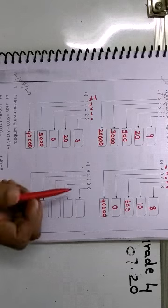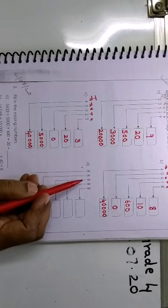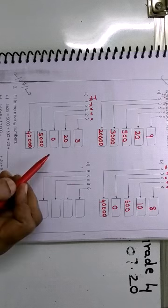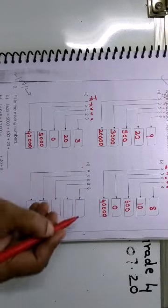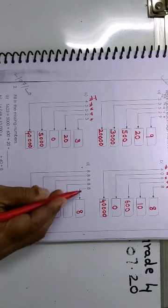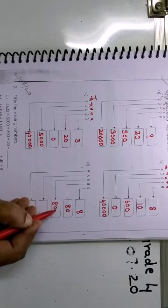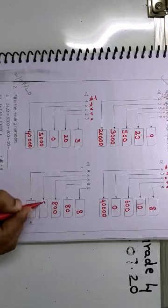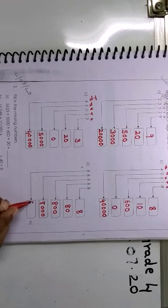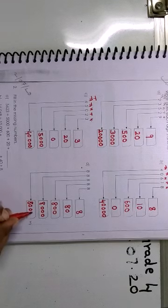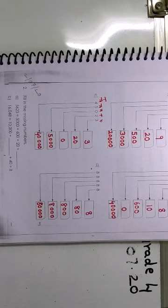Now finally we come to the last one, D1 — a very interesting number: 88888. Units, 10, 100, 1000, 10,000. So this is 8. Then 8 into 10 is 80. Then 8 into 100 is 800. Then 8 into 1000 is 8,000. And 8 into 10,000 is 80,000. So the number is 88,888.